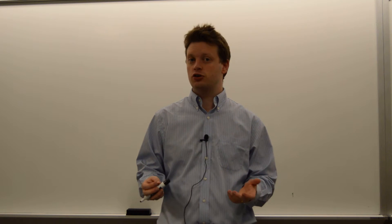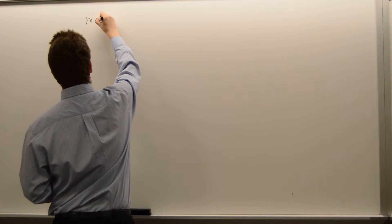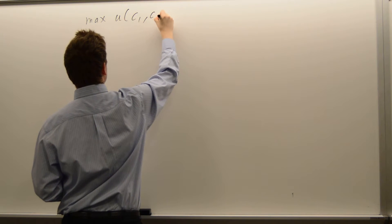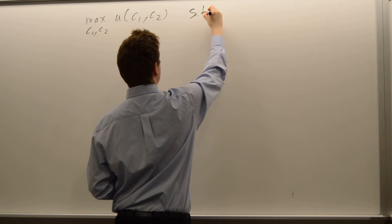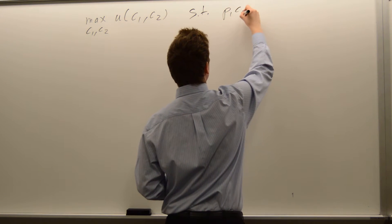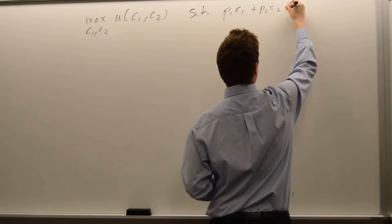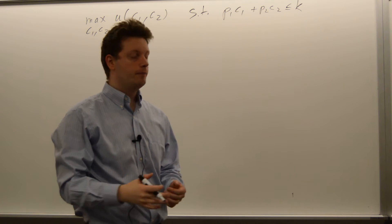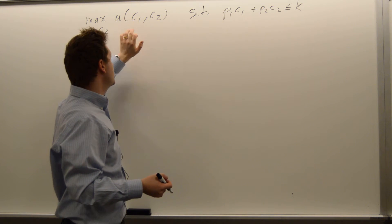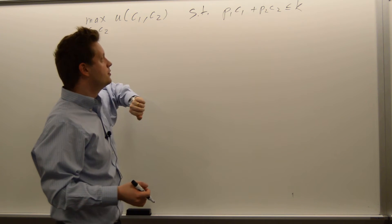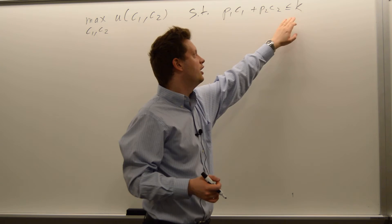Let's assume you have a standard maximization problem of the following form. We maximize u of c1 and c2 with respect to c1 and c2, such that p1·c1 plus p2·c2 is less than or equal to some value k. This looks pretty much like a consumer problem — you have a utility function that you maximize with respect to two consumption goods, a budget constraint, a price attached to each good, and some income k.